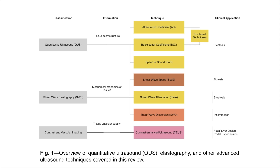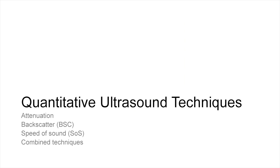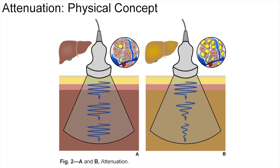QUS methods provide information on tissue microstructure through analysis of its acoustic properties. Elastography methods provide information on mechanical properties of tissues. Contrast-enhanced ultrasound allows for evaluation of vascular supply to tissues. Quantitative ultrasound techniques include attenuation, backscatter, speed of sound, or a combination of these. Attenuation refers to the decay in amplitude with depth as the ultrasound wave propagates through a tissue at a certain frequency, and is mainly determined by absorption and scattering. The main application for quantification of liver attenuation is to provide a measurement of liver fat content.